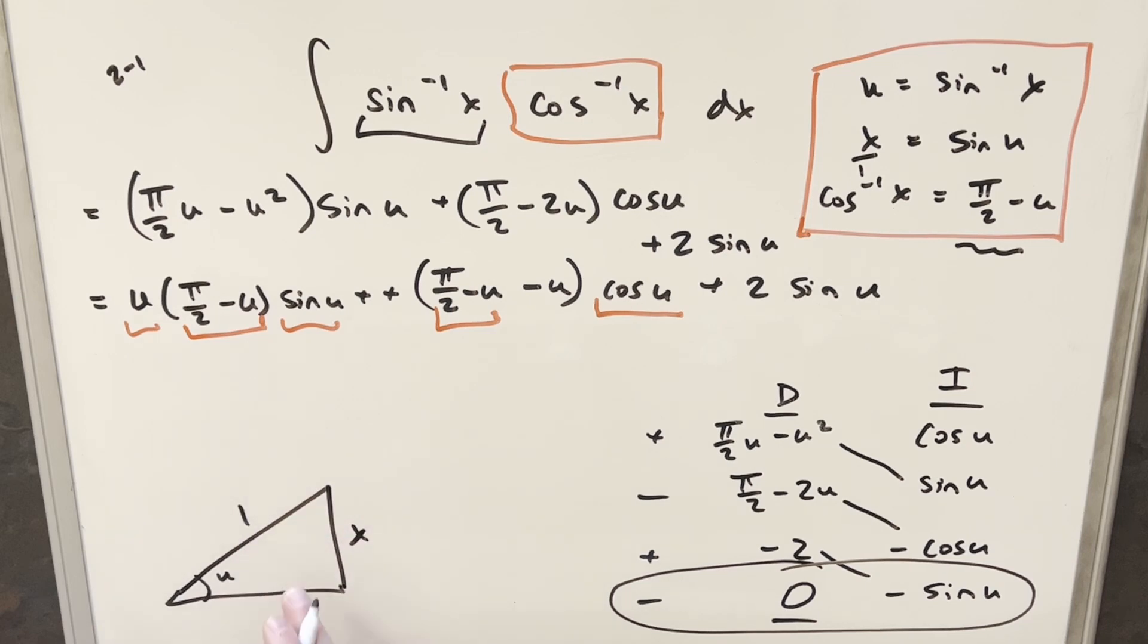Opposite over hypotenuse is x over 1. But then by the Pythagorean theorem, we can get our third side, which is going to be √(1 - x²). So then for cosine of u, cosine of u is just going to be adjacent over hypotenuse or √(1 - x²).